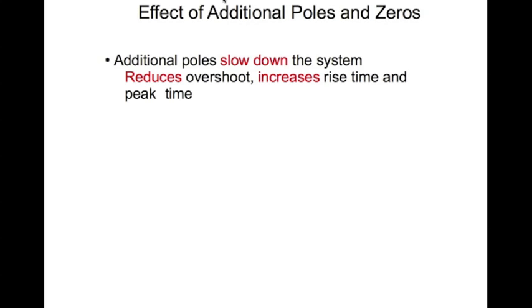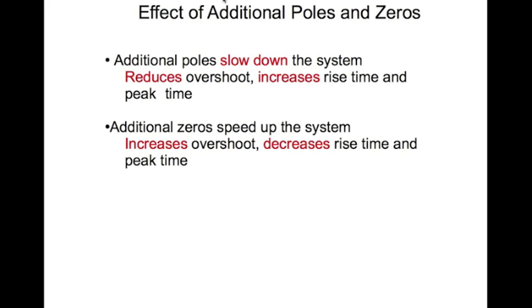To summarize: additional poles slow down the system, which means they reduce overshoot, increase the rise time and peak time. Additional zeros speed up the system, increase overshoot, and decrease rise time and peak time. So zeros do exactly the opposite of poles.